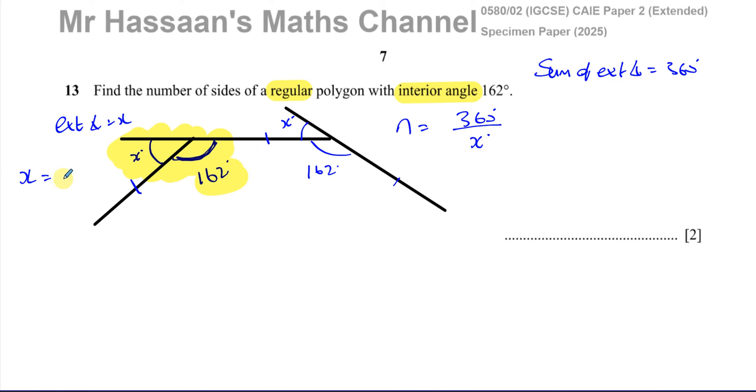What we should also realize is that at every corner of the polygon, the sum of the interior and exterior angle is 180 degrees because they make a straight line. So the exterior angle here is going to be 180 minus 162.